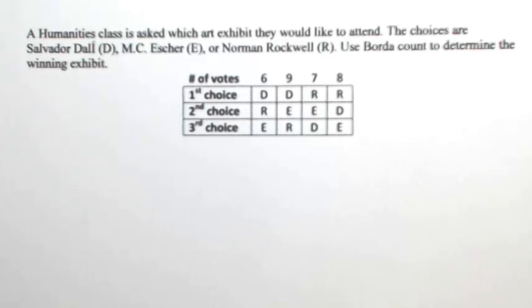A humanities class has asked which art exhibit they would like to attend. The choices are Salvador Dali, MC Escher, or Norman Rockwell. Use Borda count to determine the winning exhibit.